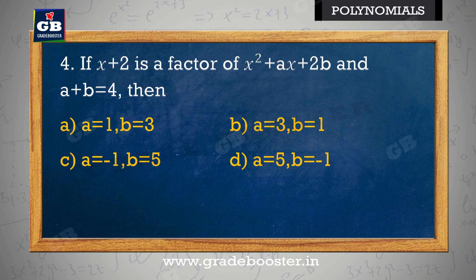If (x + 2) is a factor of x² + ax + 2b and a + b = 4, then: agar (x + 2), x² + ax + 2b ka factor hai — a) a = 1, b = 3; b) a = 3, b = 1; c) a = −1, b = 5; d) a = 5, b = −1.